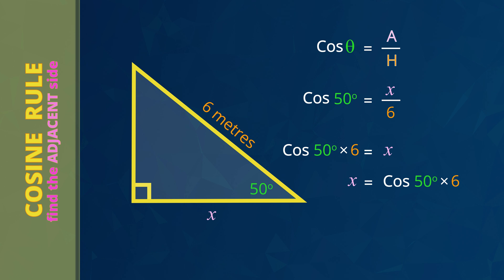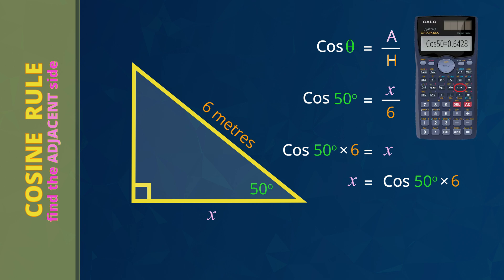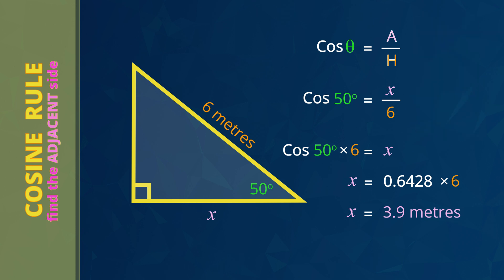Cos is a mathematical operation on an angle. Using the calculator, cos of the angle of 50 degrees is 0.6428. How we type into a calculator can vary from one calculator to another, so it's important to learn how your calculator works. So X equals 0.6428 multiplied by 6. The answer is X equals 3.9 meters. That means in this part of the roller coaster, if the angle is 50 degrees and the slope length is 6 meters, the horizontal length of this part of the roller coaster is 3.9 meters.